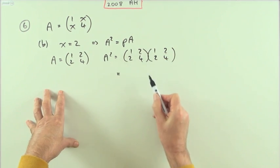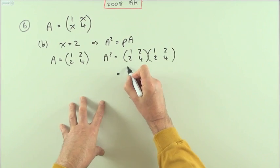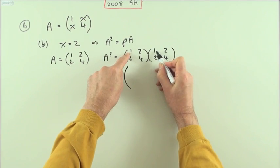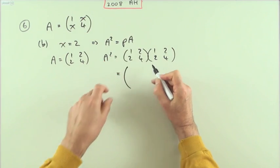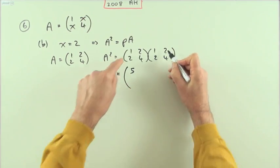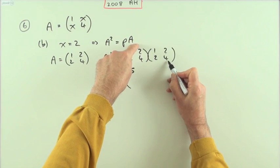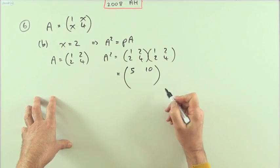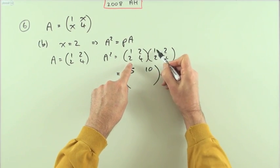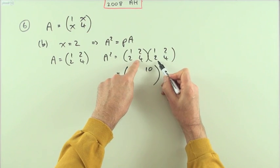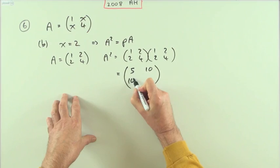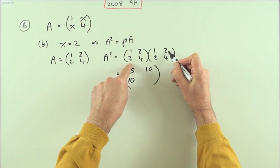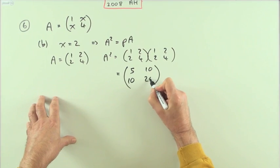That's just the scalar products of the rows times the columns. So it'll be one times one is one plus two times two is four, which makes five. One times two is two plus two times four is eight, so it's two and eight is ten. This row times each of those: two times one is two plus four twos at eight, that makes another ten. Two twos are four plus four fours are sixteen, and that makes twenty.